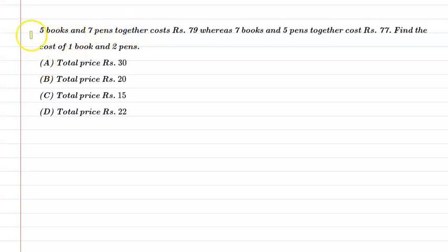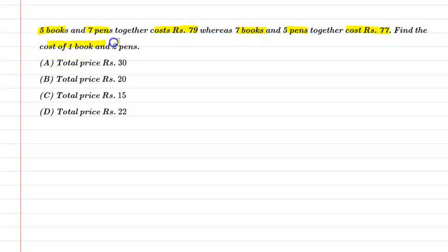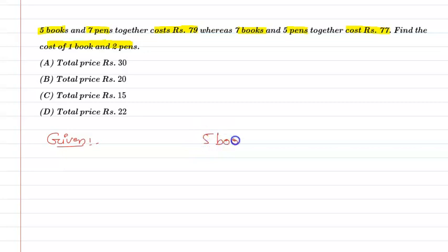Hello students, let us understand the following question. The question says: five books and seven pens together cost rupees 79, whereas seven books and five pens together cost rupees 77. Then we need to find the cost of one book and two pens. So let's start — first of all, write down the given information. Five books plus seven pens equal to rupees 79.